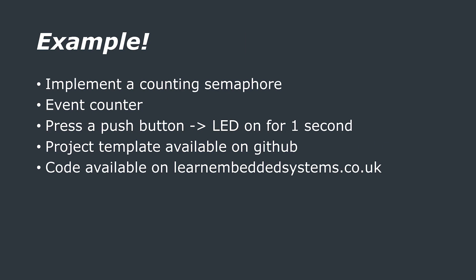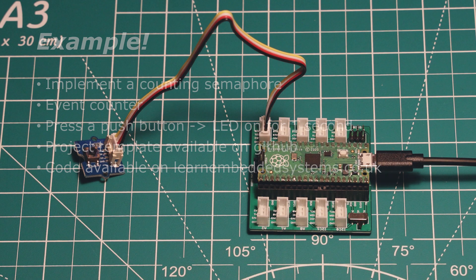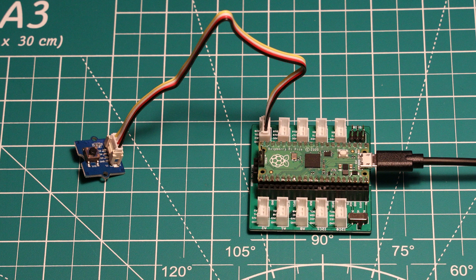I'm going to create a basic program that uses a counting semaphore as an event counter. The event being counted is a button press, and the event process is going to be turning on an LED for a second. I'll use the project template from the first part of this series, available on our GitHub — link in the description. The written code will also be on our website. I'm using a Raspberry Pi Pico mounted to a Grove shield with a push button connected to GPIO pin 20, though you can just wire up a normal push button to pin 20.